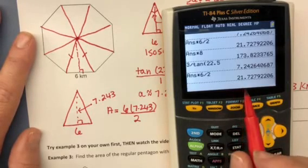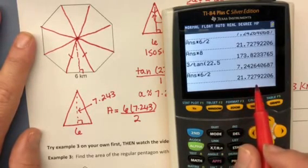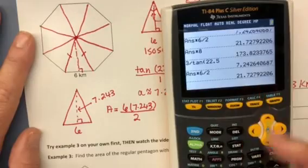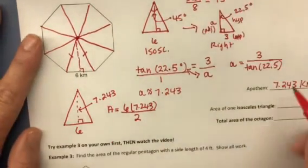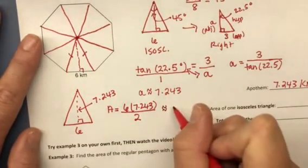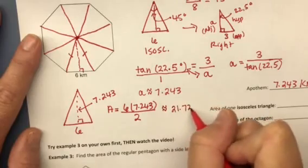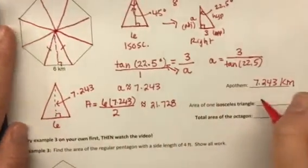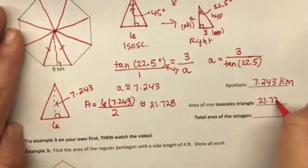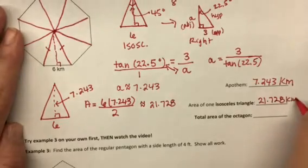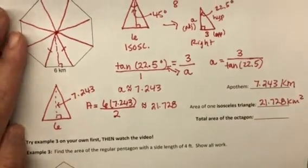All right. So we get 21.728 because the 9 rounds the 7 up. So the area is about 21.728 and that's going to be in kilometers squared.